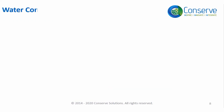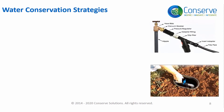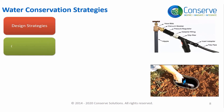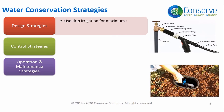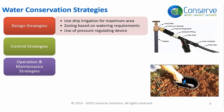For ease of understanding, water conservation strategies for efficient irrigation systems can be broadly classified as design strategies, control strategies, and operation and maintenance strategies. Design strategies include using drip irrigation for maximum area in the landscape, zoning the irrigation system into different areas based on watering requirements, and using a pressure regulating device to maintain optimum pressure.